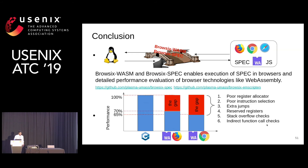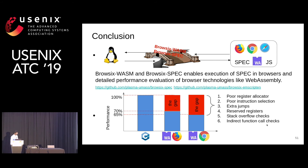In summary, we developed Browsix-Wasm and Browsix-Spec, which enables execution of SPEC benchmarks in browsers. We performed a study on WebAssembly and found that WebAssembly is around 55% slower in Google Chrome and 45% slower in Mozilla Firefox.